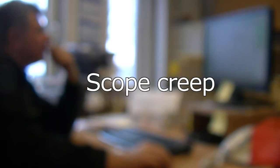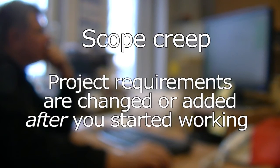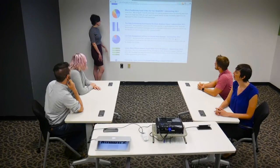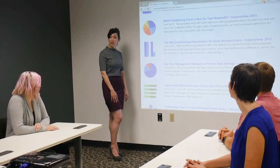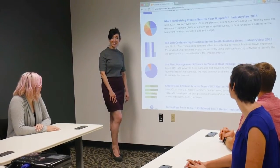Scope creep happens when project requirements are changed or added after you've already started working. For example, say stakeholders are weighing in on your progress, and this happens.